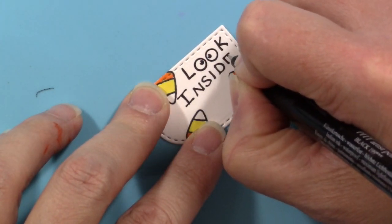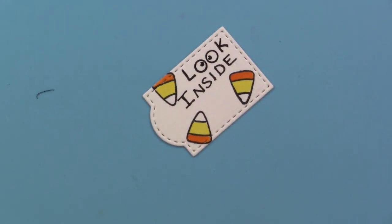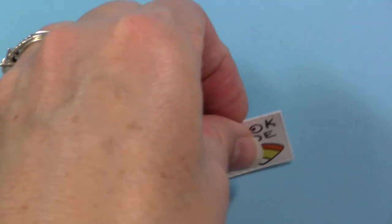Once I'm finished with that, I will simply adhere that to the envelope. But before I adhere it, I'd like to actually put a little hole punch and add some of that cute black and white gingham ribbon that comes in your kit.